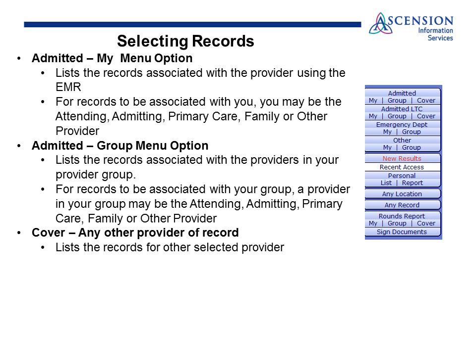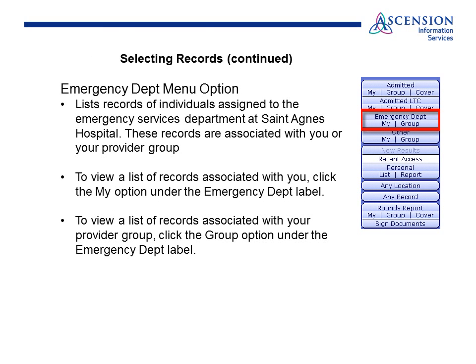Cover: Cover is for any other provider of record and lists records for the other selected provider or providers. Emergency Department menu: lists records of individuals assigned to the emergency services department at St. Agnes Hospital. These records are associated with your provider group. To view a list of records associated with you, click the My option under the emergency department label. To view a list of records associated with your provider group, click the Group option under the emergency department label.